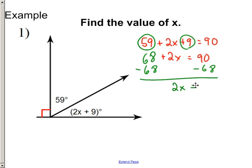This would equal 22. So 90 minus 68 is 22, and then we can just divide both sides by 2.